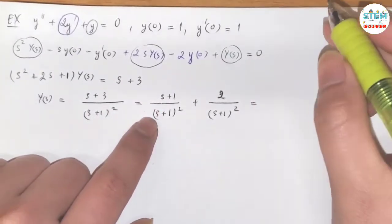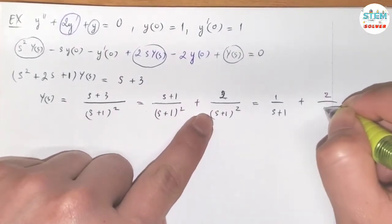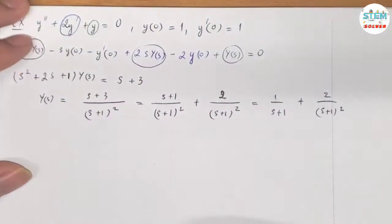Now for this one, we can simplify this. So this will end up with 1 over s plus 1. And rewrite this. Much simpler now.